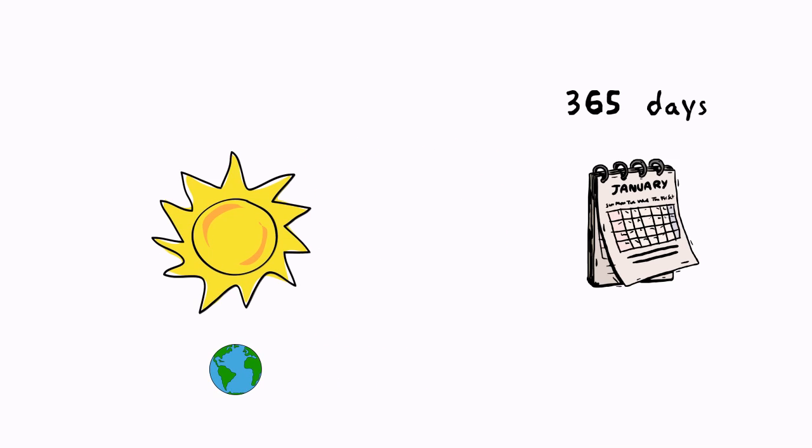It's supposed to match the solar year, but things aren't quite that simple. It actually takes Earth 365 days, 5 hours, 48 minutes, and 46 seconds to complete its orbit.